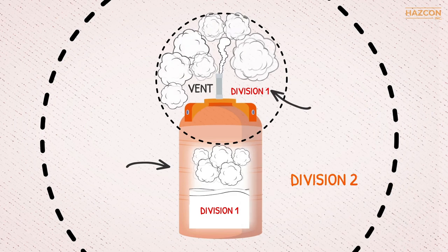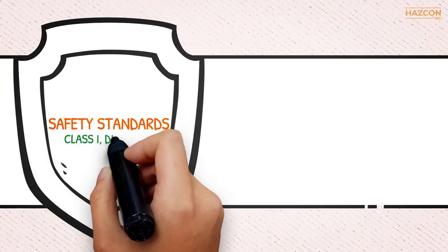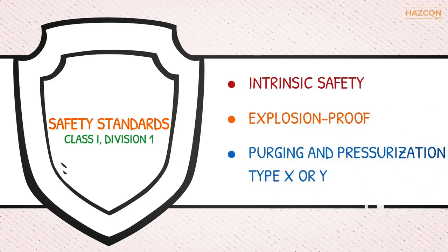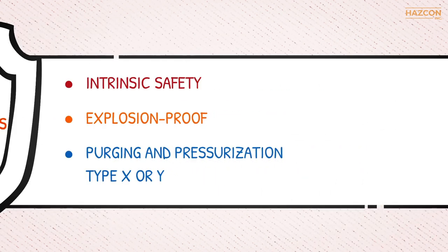In order to be certified as compliant with safety standards for Class 1 Division 1, the product must be protected by one or more of the following three protection techniques: intrinsic safety, explosion proof, and purging and pressurization type X or Y.